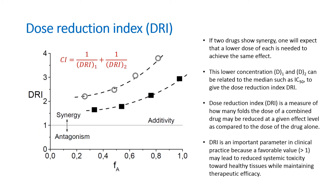Based on the combination index equation, if two drugs show synergy, one will expect that a lower dose of each is needed to achieve the same effect. This lower concentration D1 and D2 can be related to the median, such as IC50, to give the dose reduction index, or DRI. DRI is a measure of how many folds the dose of a combined drug may be reduced at a given effect level compared to the dose of the drug alone. DRI is an important parameter in clinical practice because a favorable value may lead to reduced systemic toxicity toward healthy tissues while maintaining therapeutic efficacy.